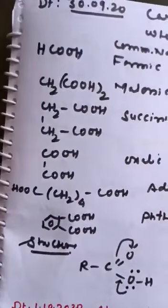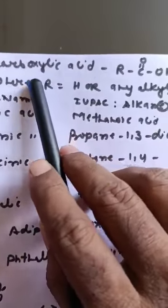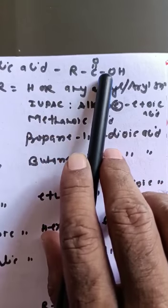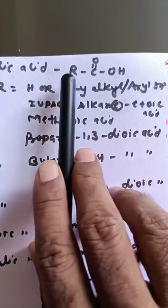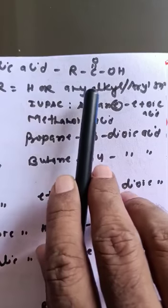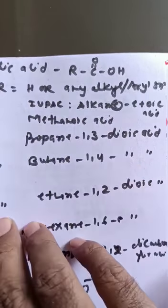First, we discuss the naming of carboxylic compound. The carboxylic compound represented by R-C double bond O, single bond OH, where R is hydrogen or any alkyl or aryl group.